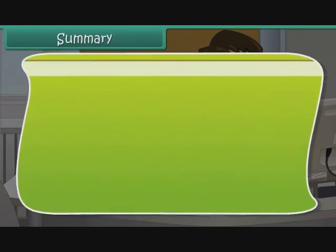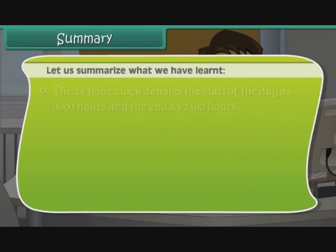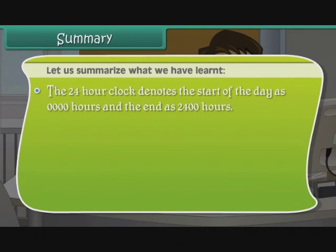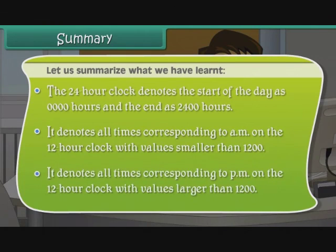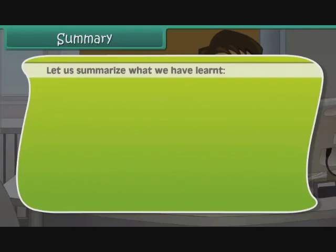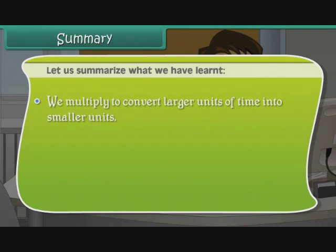Summary: The 24-hour clock denotes the start of the day as 0000 hours and the end as 2400 hours. It denotes all times corresponding to a.m. on the 12-hour clock with values smaller than 1200, and all times corresponding to p.m. with values larger than 1200. We multiply to convert larger units of time into smaller units, and we divide to convert smaller units of time into larger units.